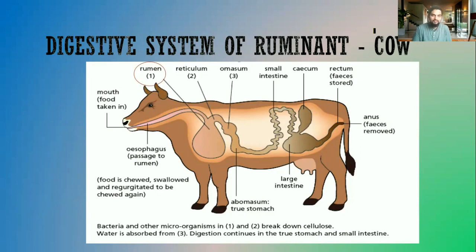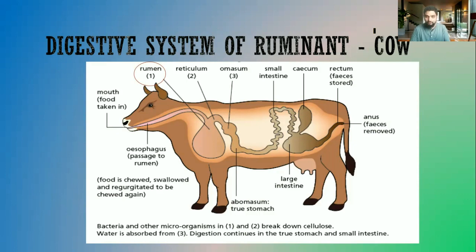Mammals do not produce enzymes that can digest cellulose. Cellulose is a carbohydrate that contains a lot of energy, but human beings cannot digest it — it simply passes through the digestive system. The bacteria present in the rumen will break down the cellulose and produce some amount of vitamin B, which can be absorbed and used as a nutrient by the animal.